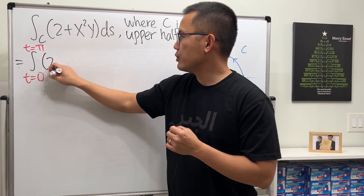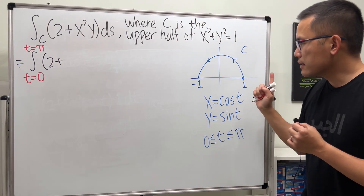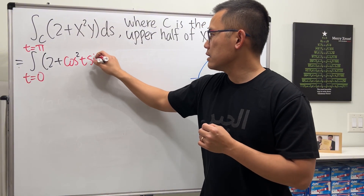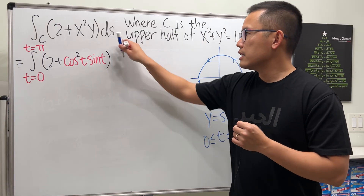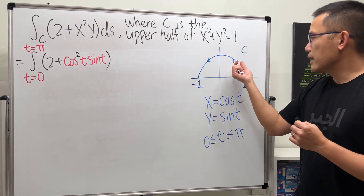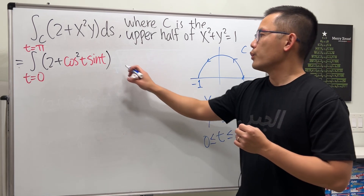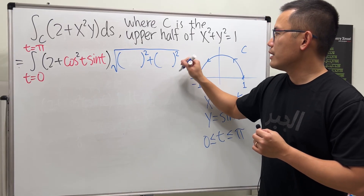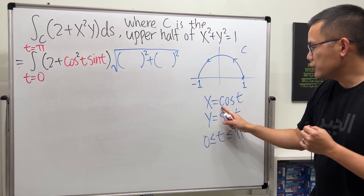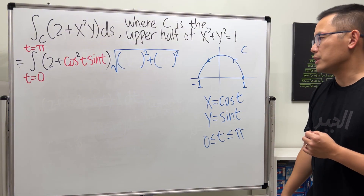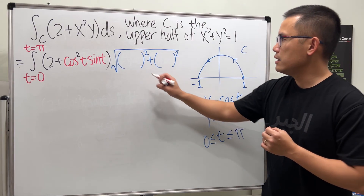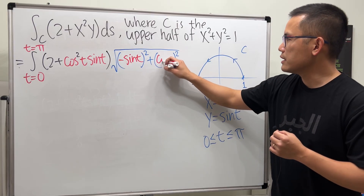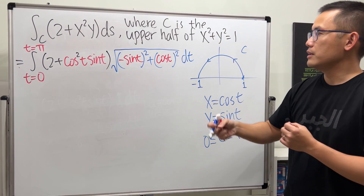This becomes the integral going from t equals 0 to pi. We have 2 plus — x is cosine t — so we write cosine squared t, times y which is sine t. For the ds, this is just a small change in arc length. We open a square root, differentiate x to get negative sine t, differentiate y to get cosine t, square and add them, then multiply by dt.